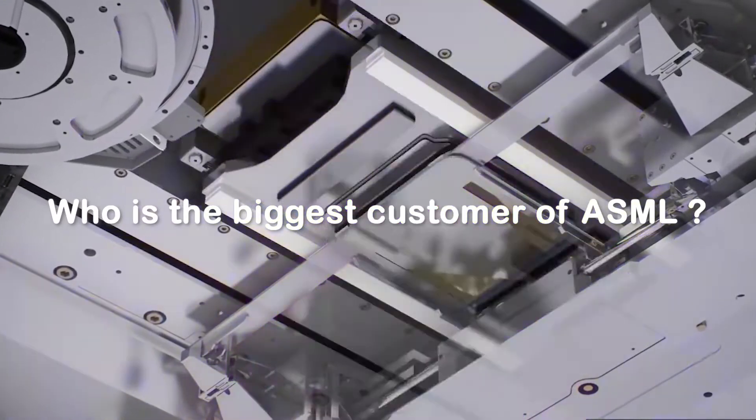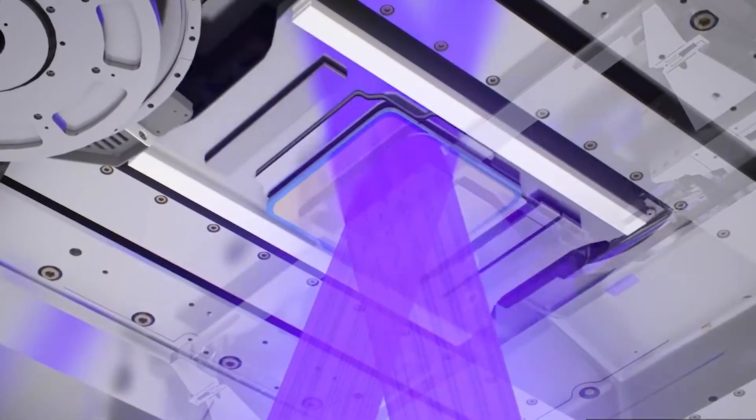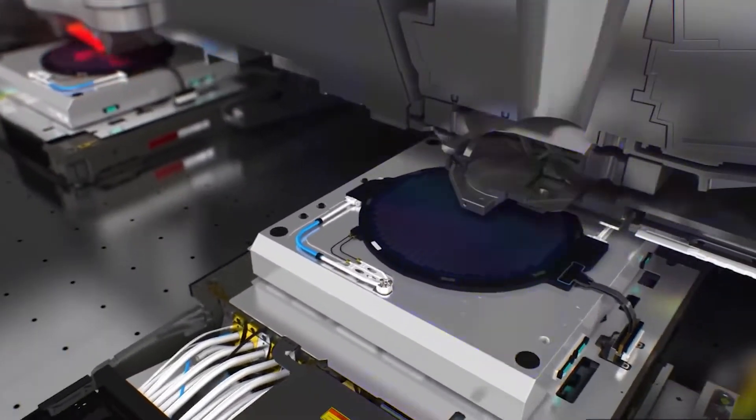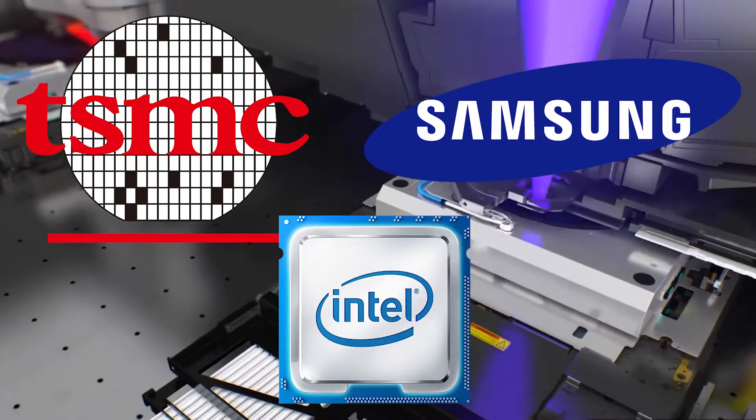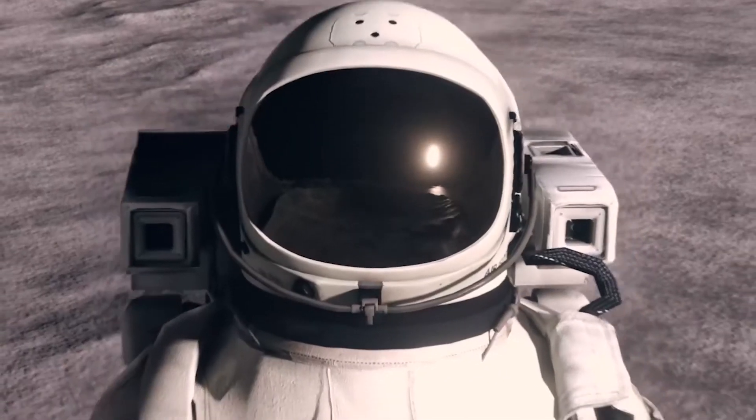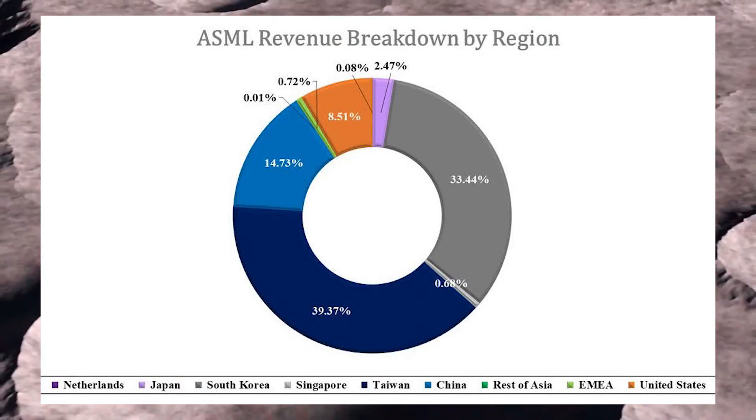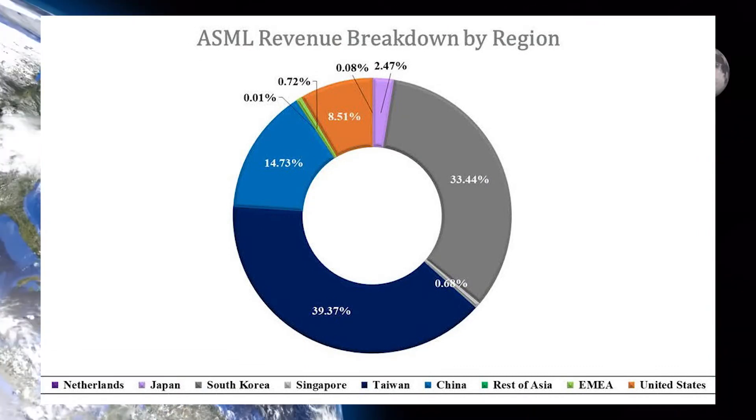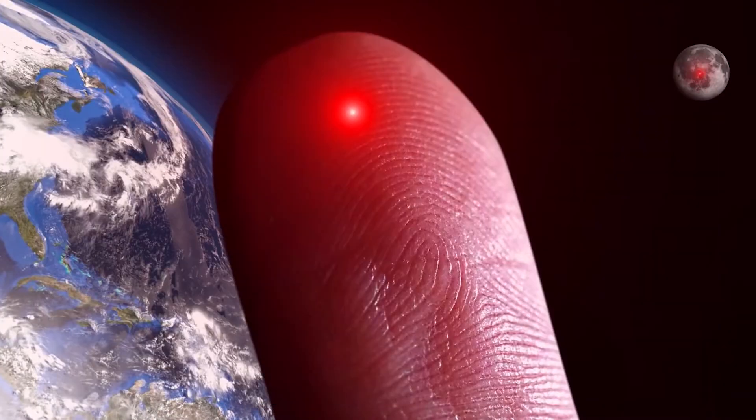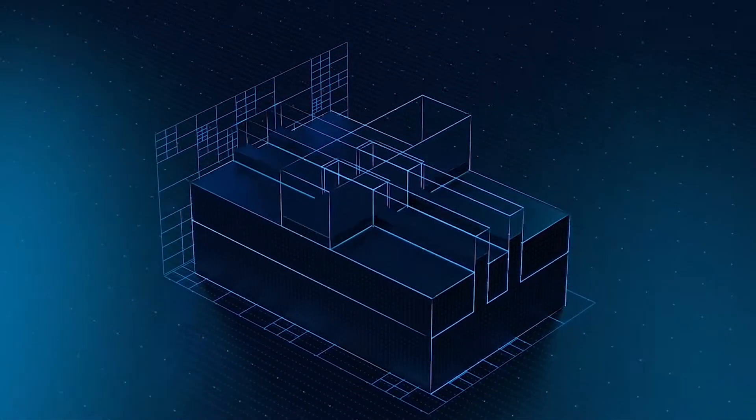Who is the biggest customer of ASML? According to ASML's annual report, its key customers are TSMC, Samsung, and Intel. Additionally, its revenue breakdown by region has Taiwan 34%, South Korea 30%, and the US 12% respectively, corresponding to TSMC, Samsung, and Intel locations.